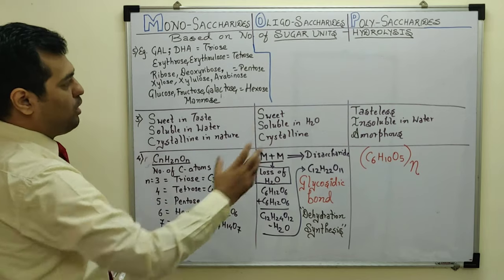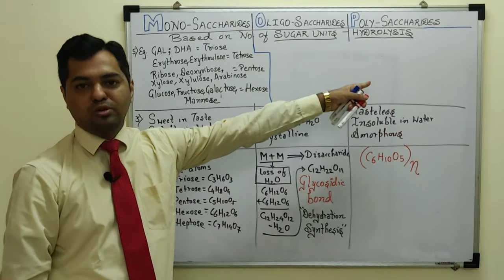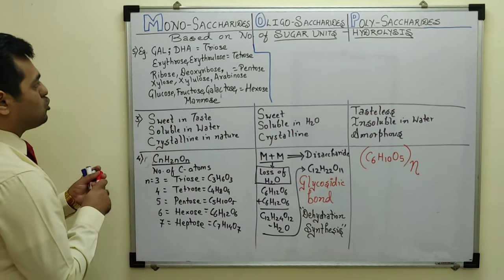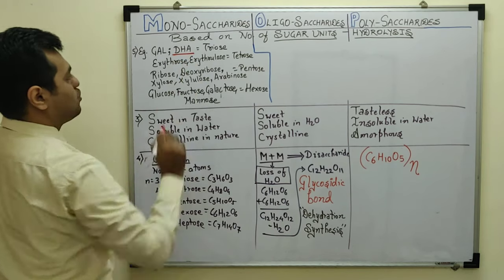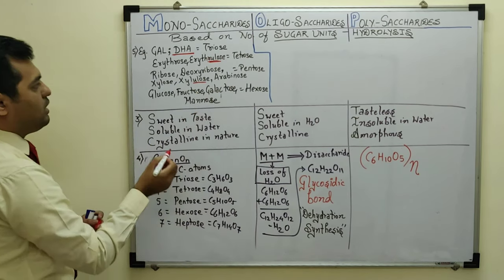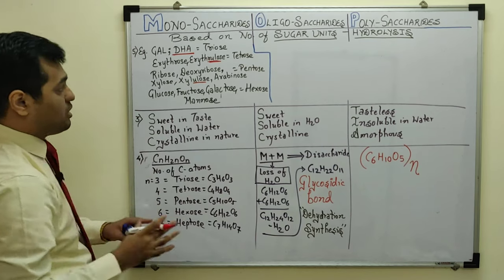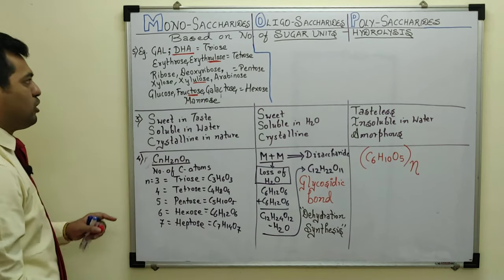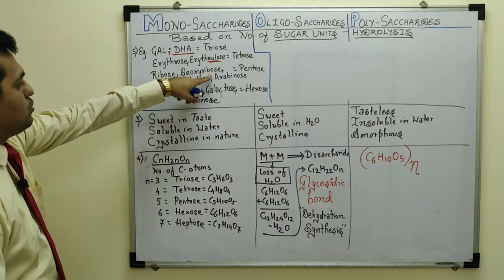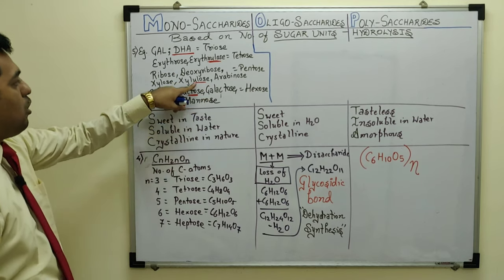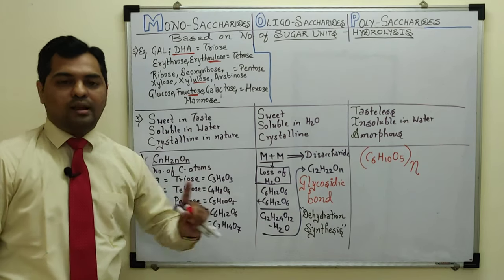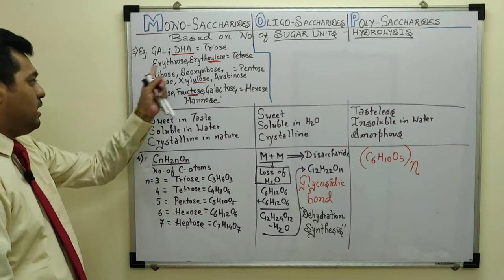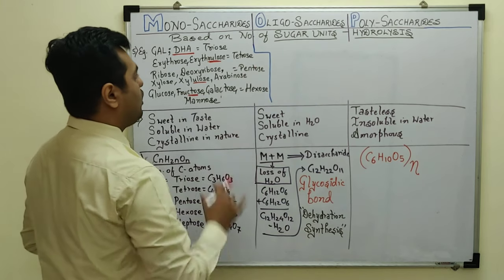Monosaccharides can also be classified by their functional group — aldehyde (aldose) or ketone (ketose). Glyceraldehyde, ribose, deoxyribose, glucose, galactose, and mannose are aldoses. Dihydroxyacetone (acetone is a ketone), erythrulose, xylulose, and fructose are ketoses — substances with the ketonic functional group. Generally, names with '-ulose' tend to be ketoses. The next video will discuss glucose, fructose, galactose, and mannose structures in detail.